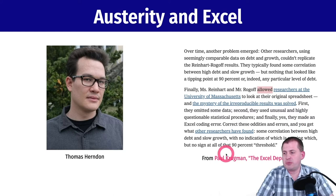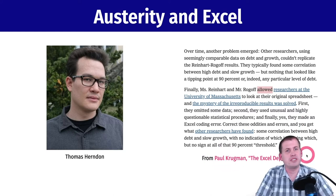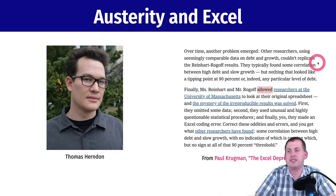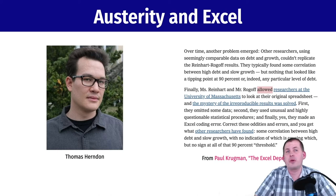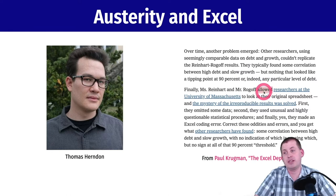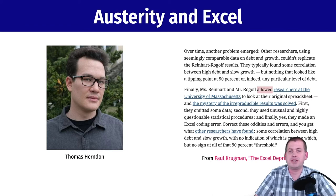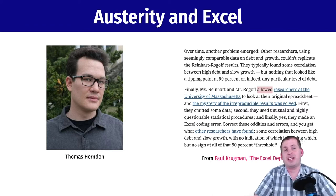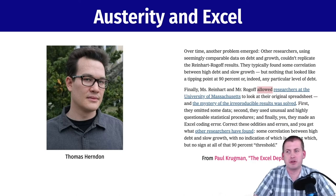Paul Krugman, a Nobel Prize-winning economist and opinion writer for the New York Times, wrote about this problem. What Thomas Herndon discovered was that there was no negative effect on GDP growth if countries had high debt-to-GDP ratios. He only discovered this because Reinhart-Rogoff allowed him to look at the data — and I highlight that because that was the prevailing attitude at the time: you had to decide if the person wanting your data was worthy. Nowadays it's becoming more of a norm to just share your data.